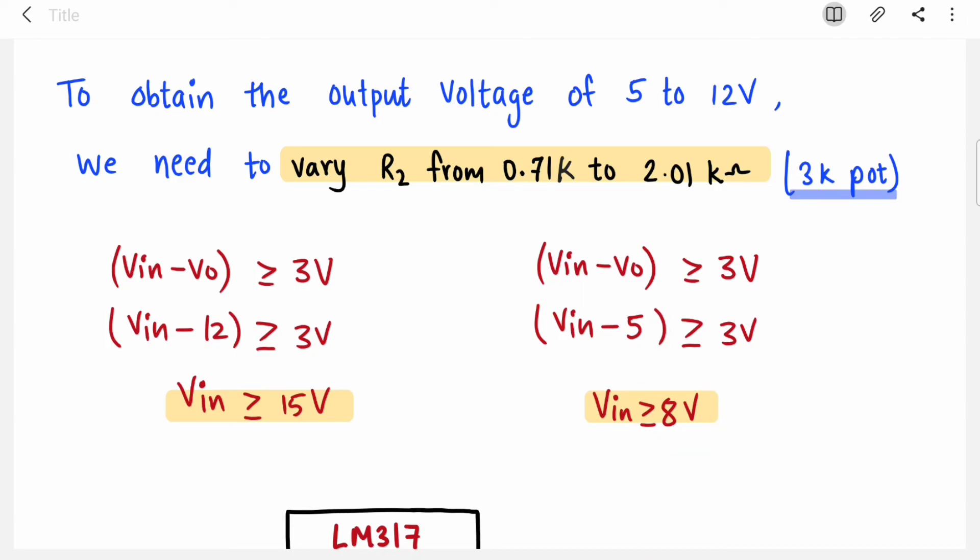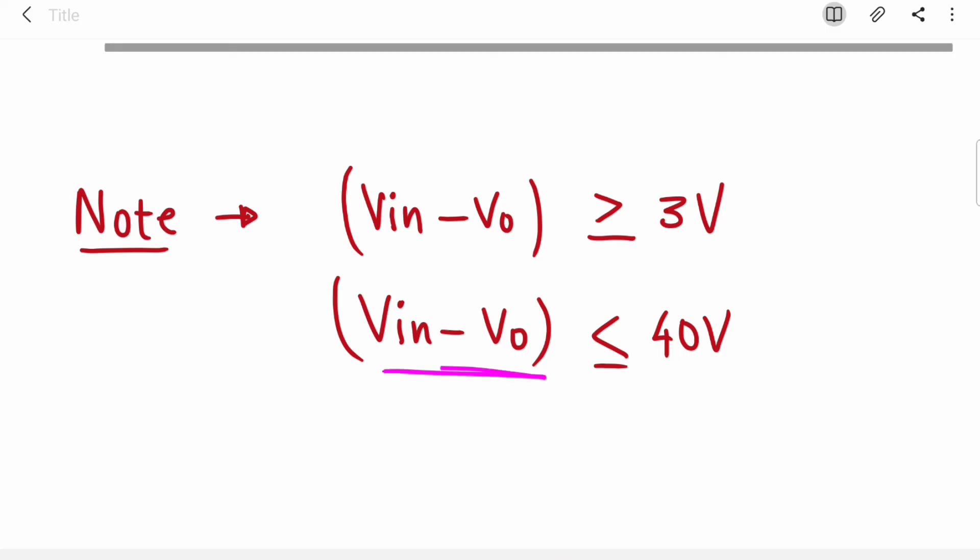Suppose I give 20 volts. 20 volts is greater than 8 volts and also greater than 15 volts, so by giving 20 volts I am getting adjustable output voltage from 5 to 12 volts. I can get 6, 7, 10, anything by providing 20 volts. This is just an example. Make sure the difference does not exceed 40 volts.